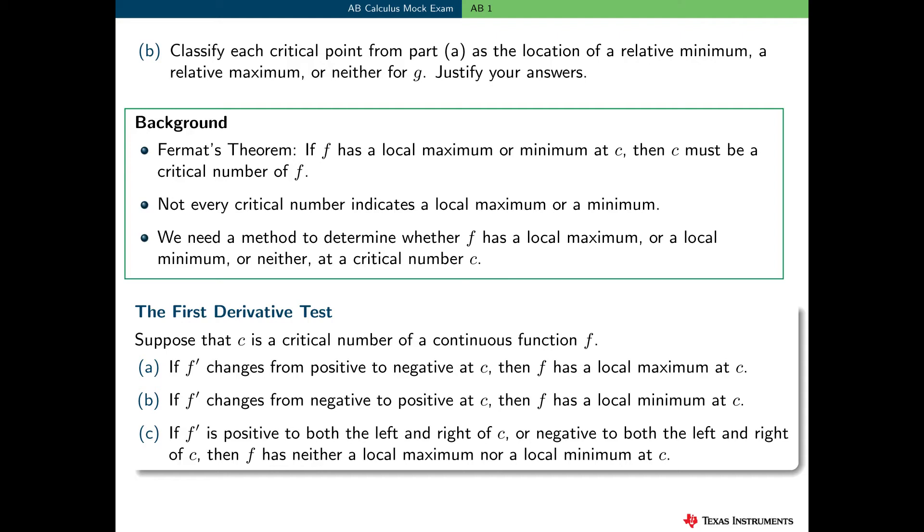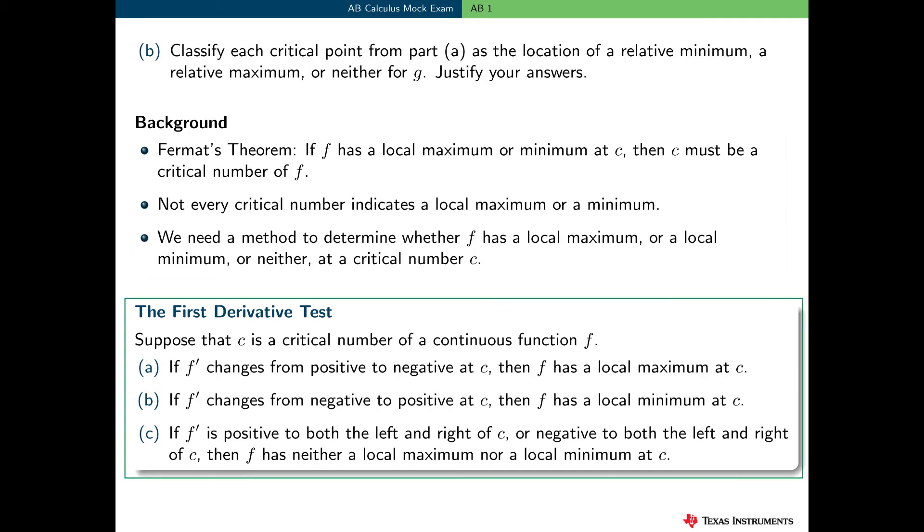So, we need to recall a method to determine whether f has a local maximum or minimum or neither at c. A typical way to solve this problem is to use the first derivative test. This says that suppose c is a critical number of a continuous function f. If f prime changes from positive to negative at c, then f has a local maximum at c. If f prime changes from negative to positive at c, then f has a local minimum at c. And if f is positive both on the left and the right of c, or negative on both the left and the right of c, then f has neither a local max nor a local min at c.